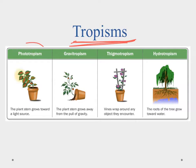The easiest and most obvious tropism is phototropism — the plant stem grows towards a light source because the stem's purpose is to get the leaves closer to the light. So if you have a plant near a window and it's off to the side, you'll see that the plant will lean and actually grow towards the light.